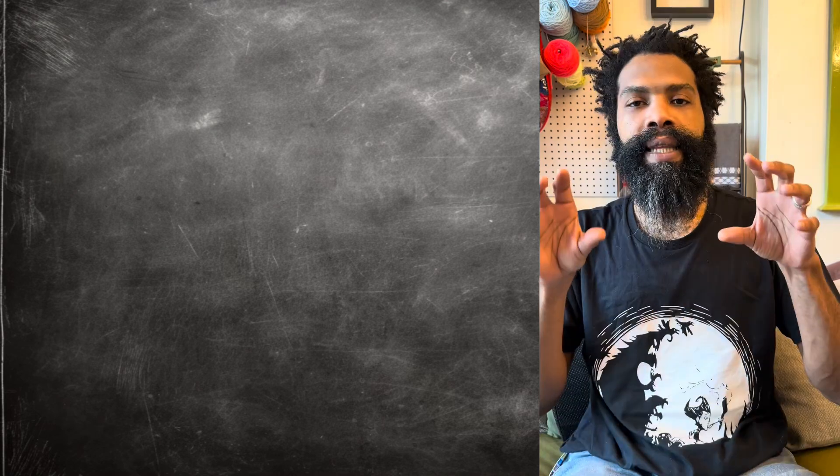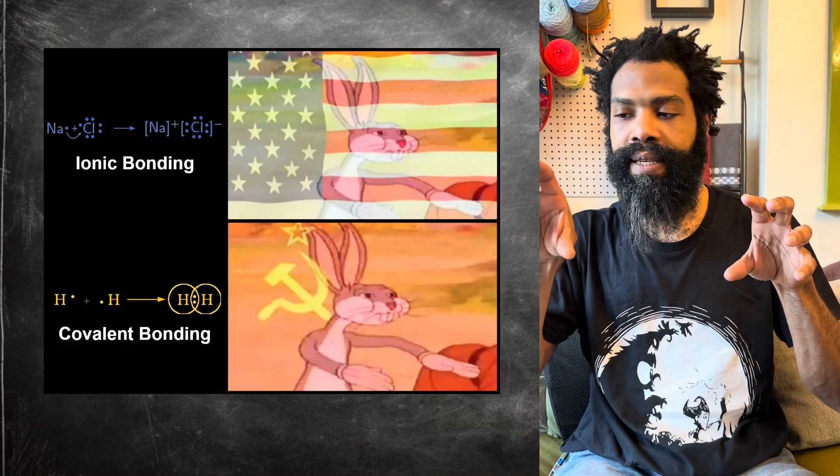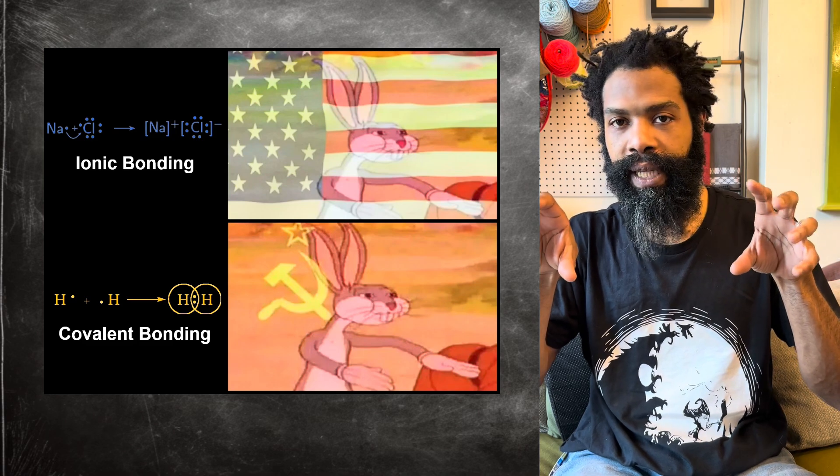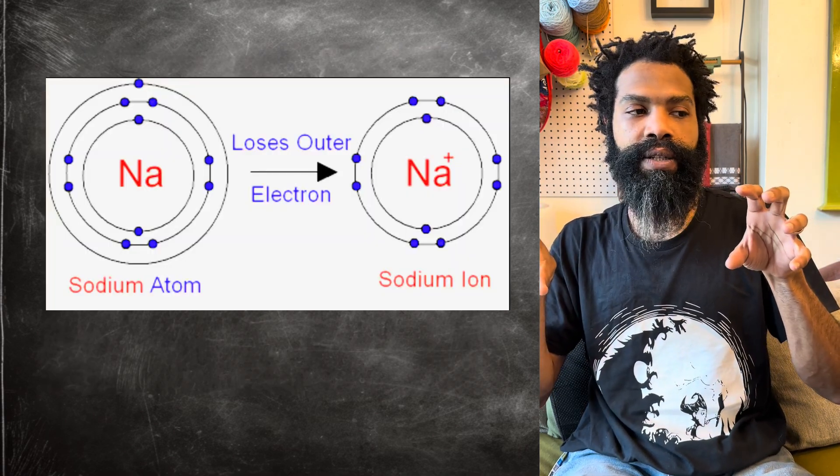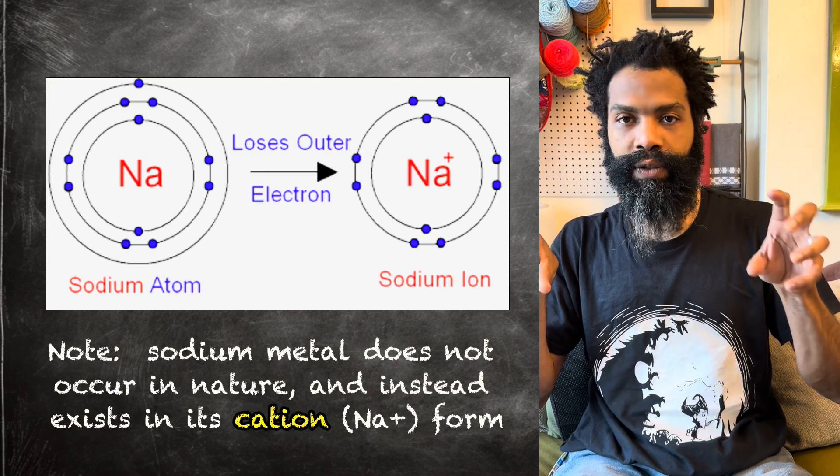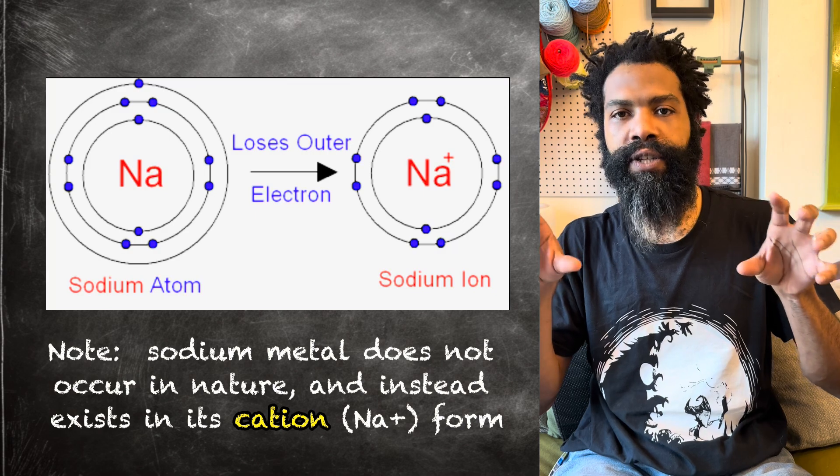But how does that happen? In the case of an ionic bond, instead of having one thing with some electrons and another thing with some electrons that want to share them, one of these things, call it sodium, is missing one electron. And it's usually happy to be missing that one electron. It's a lower energy state for it.